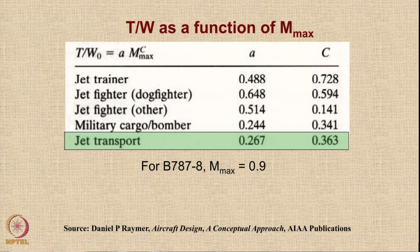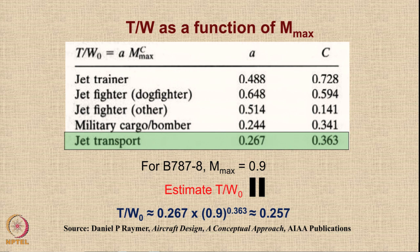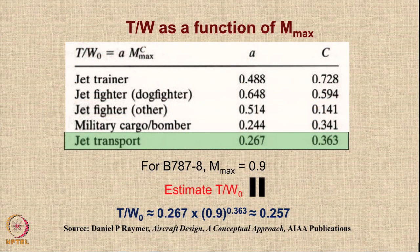The value comes out to be 0.257. As per the previous slide, the approximate value was between 0.2 and 0.3 for a twin-engine aircraft, and now with the maximum Mach number available we get a slightly better estimate of 0.257. If your answer is far from this — say 0.4 or 0.1 — you should distrust your calculations. A value near 0.257 indicates a correct answer.